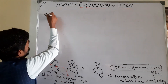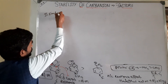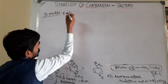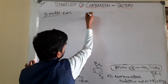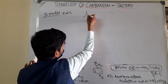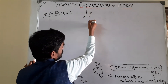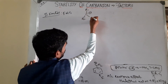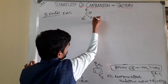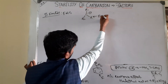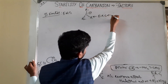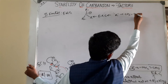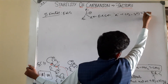Now we will do the second factor - electron releasing groups, which release electrons. For example, consider a compound where carbon has a negative charge, with R1, R2, and a Z group. The Z group is an electron releasing group, like alkyl groups - methyl group, ethyl group, etc. And also alkoxy groups like methoxy group and ethoxy group.